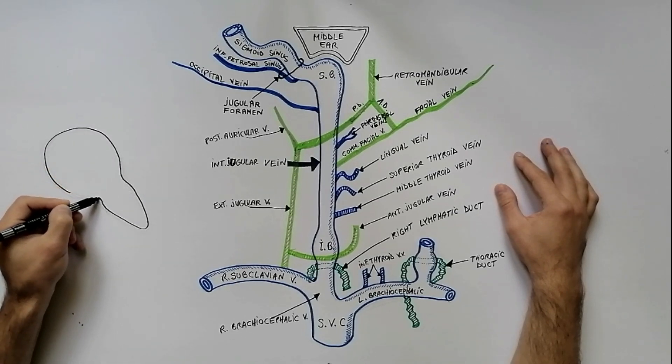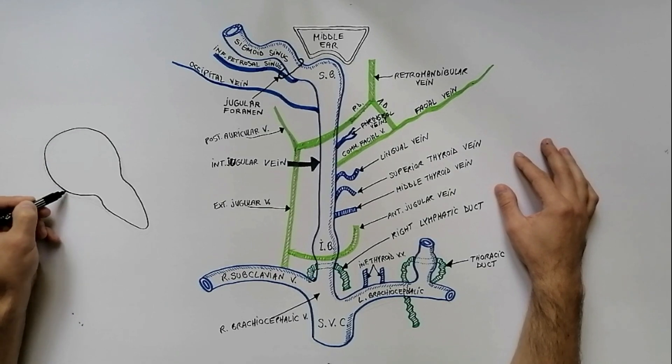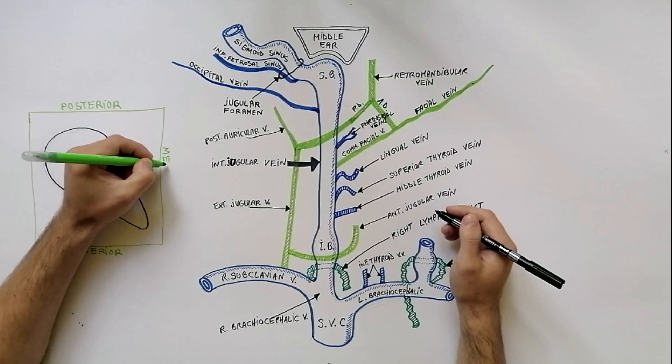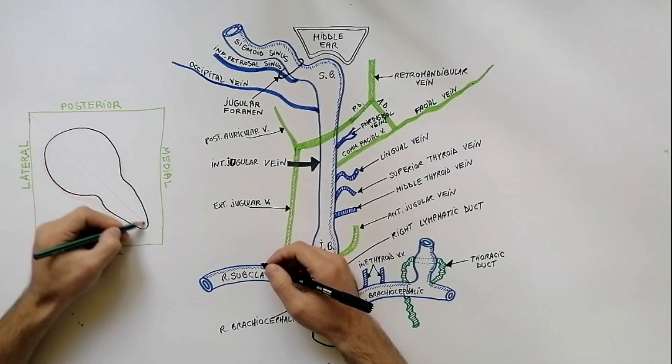We will draw now a more detailed diagram of the jugular foramen. The jugular foramen has a pear shape with long axis directed anteromedially.